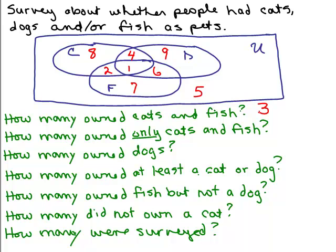How many owned only cats and fish? When I say only, I mean they did not have a dog. So we look at the intersection but don't include the 1 person who had a dog — that gives only 2. How many owned dogs? We look at set D representing dogs and see four numbers in there: 4, 9, 1, and 6, which gives us 20. So 20 people owned dogs.